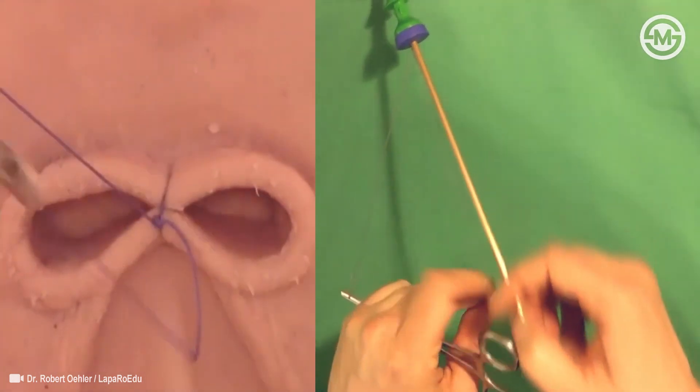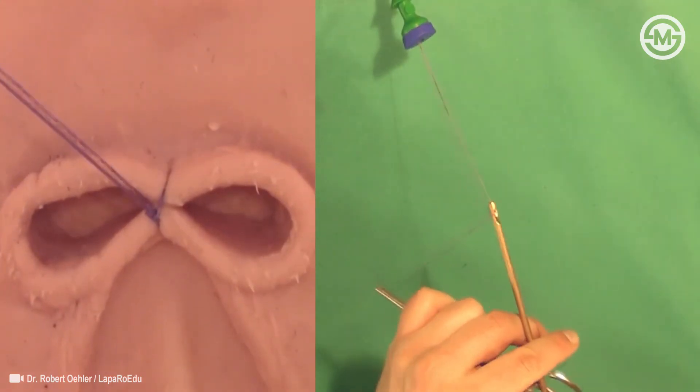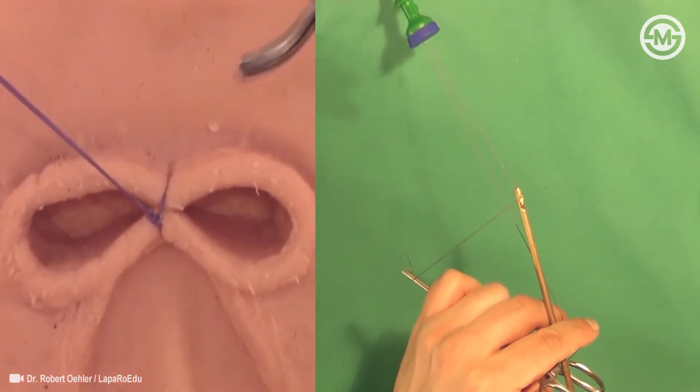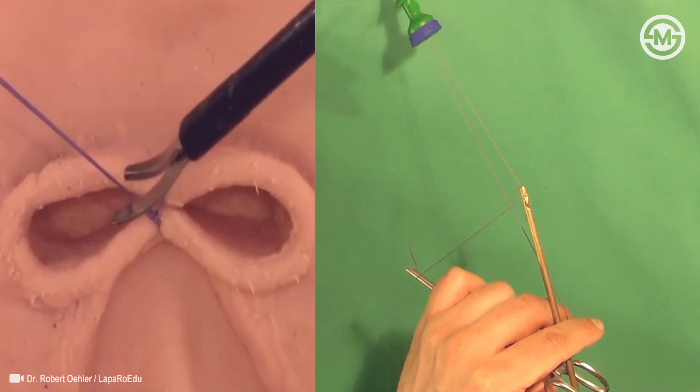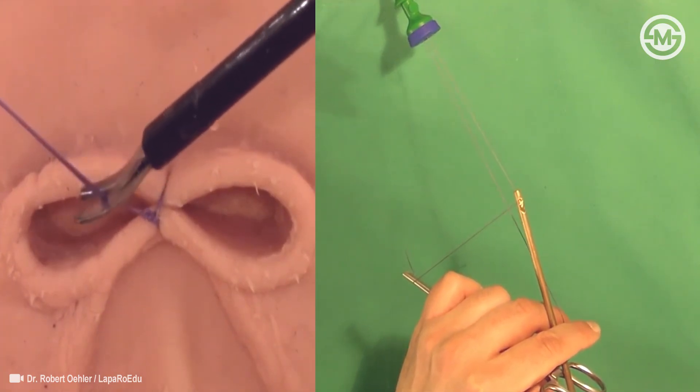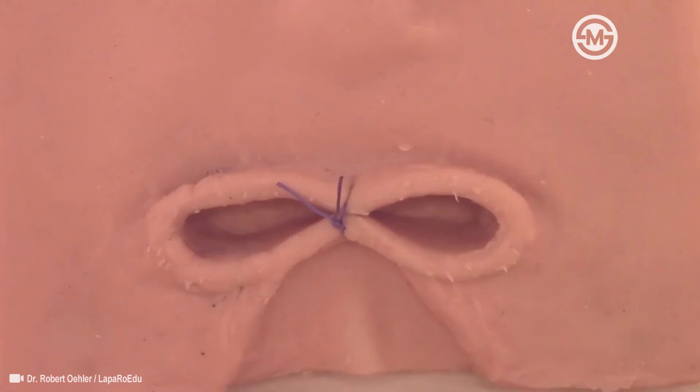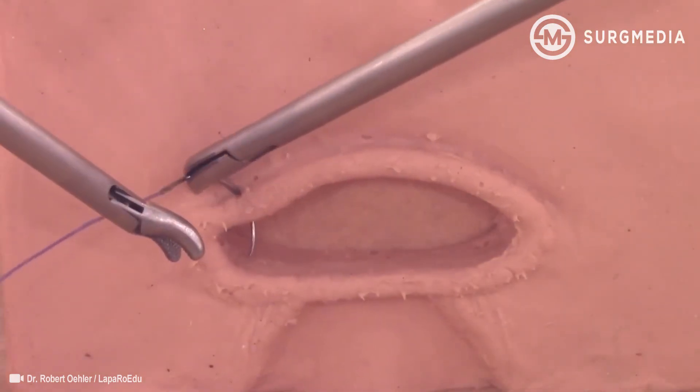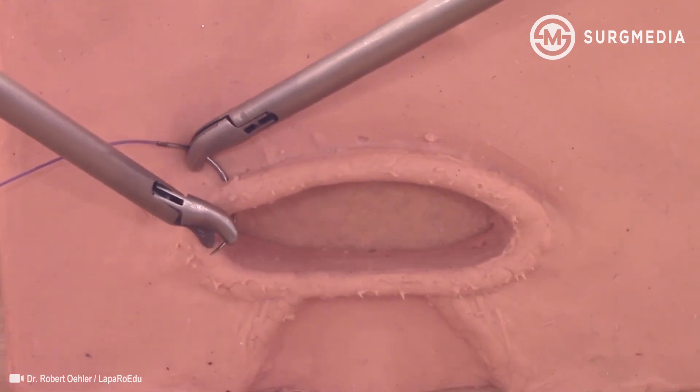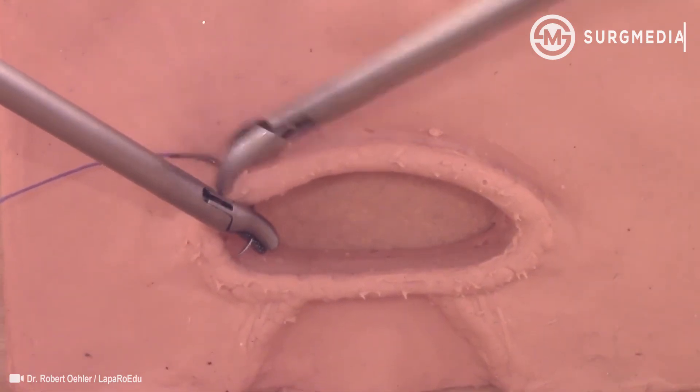For educational purposes, the suture is shown in the middle. In real surgery, vaginal cuff closure should always start at the corners and include the sacro-uterine ligaments. Up to five single stitches, or three figure-of-eight sutures, are recommended to achieve good culpotomy closure and prevent vaginal cuff dehiscence.